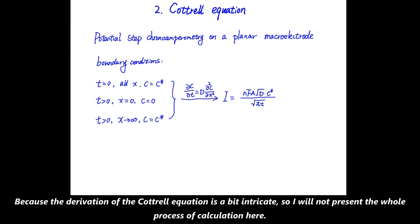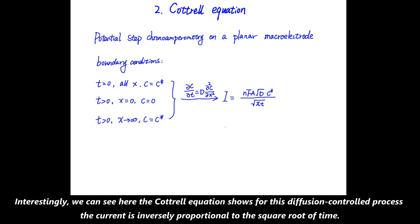Because the derivation of the Cottrell equation is a bit intricate, so I will not present the whole process of calculation here. Interestingly, we can see here, the Cottrell equation shows for this diffusion-controlled process, the current is inversely proportional to the square root of time.